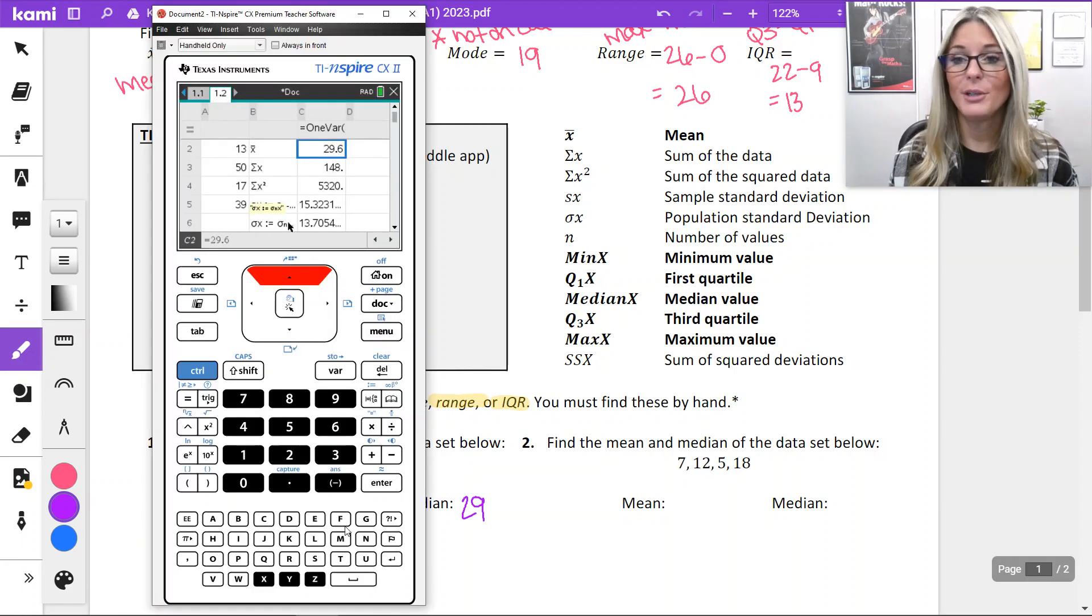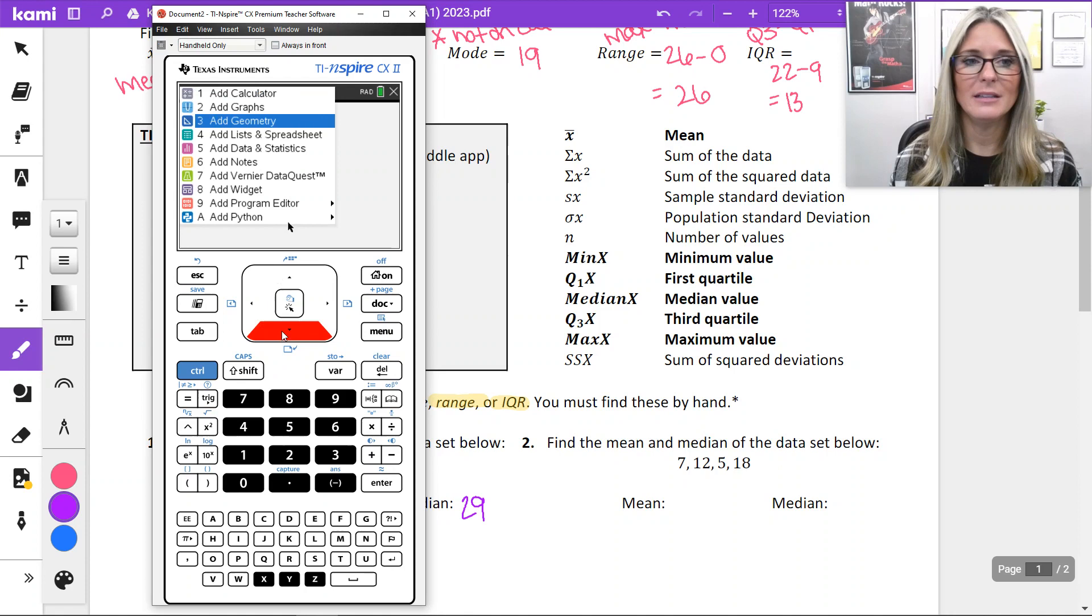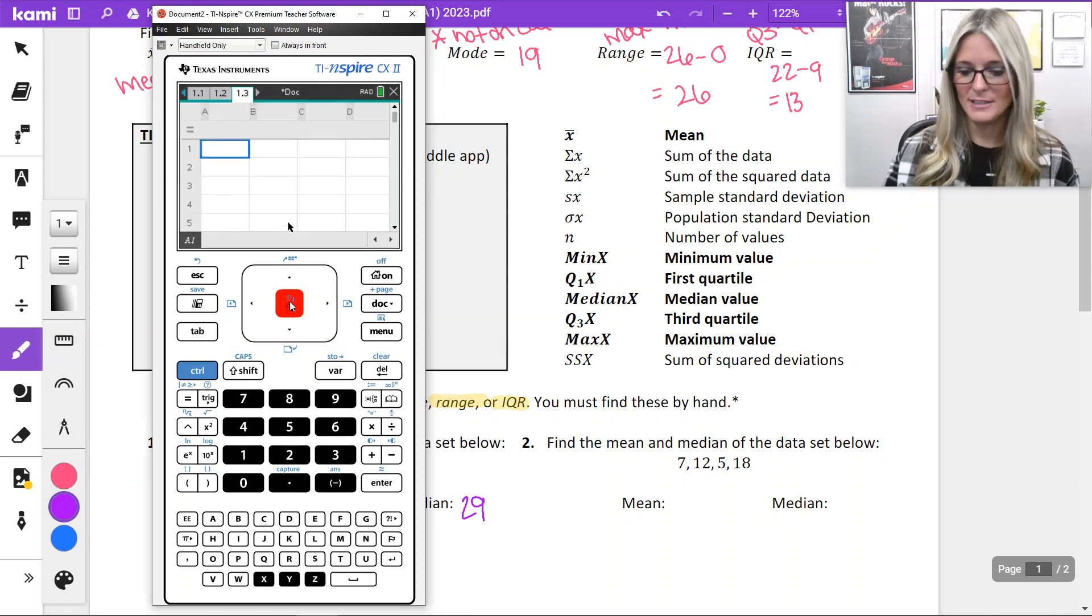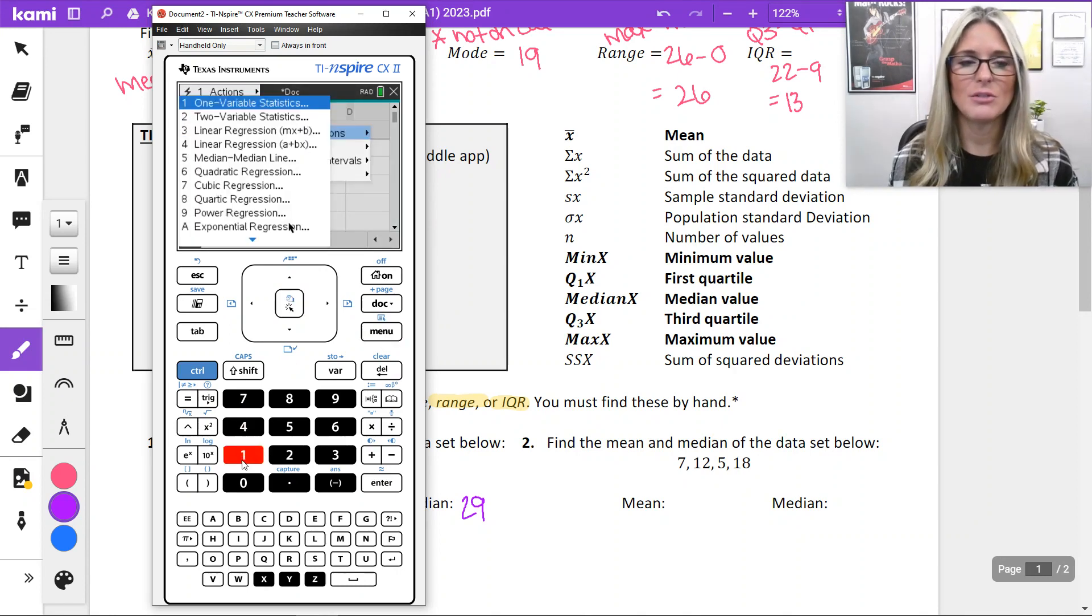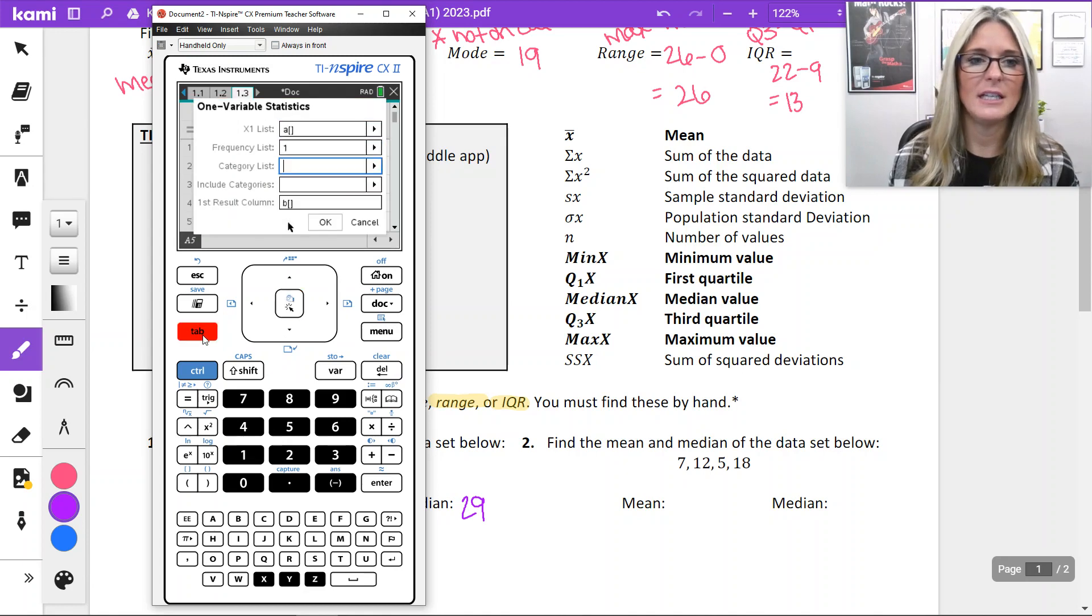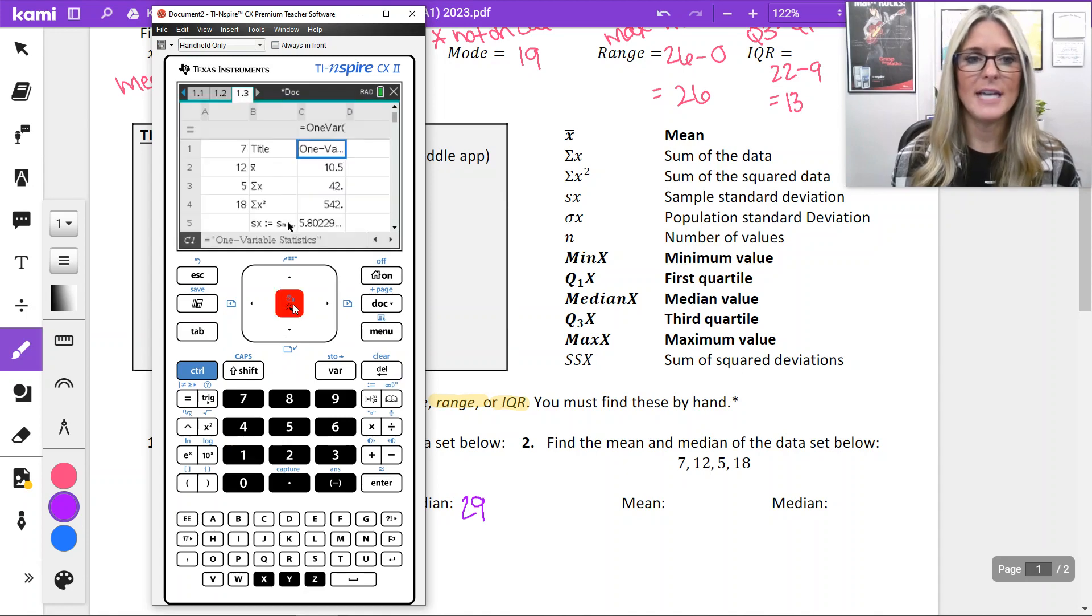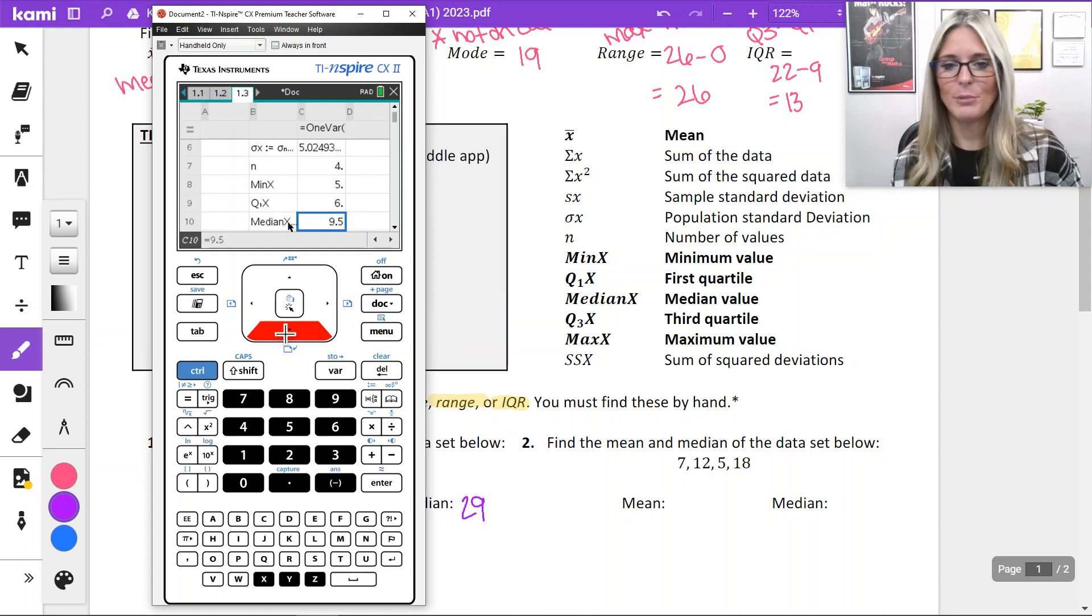Modeling again for number two. So last time I did control doc to open a new tab. You can also do control I to insert a new tab. We're still doing lists and spreadsheets. I'm going to type in 7, 12, 5, and 18. This one is not a long list. It wouldn't be a big deal to solve it by hand, but just modeling on the calculator. Menu. Statistics. Stat calculations. One variable statistics. All of this is good to leave and go down to the OK button with our tab key. Our mean is 10.5. Our median is 9.5.